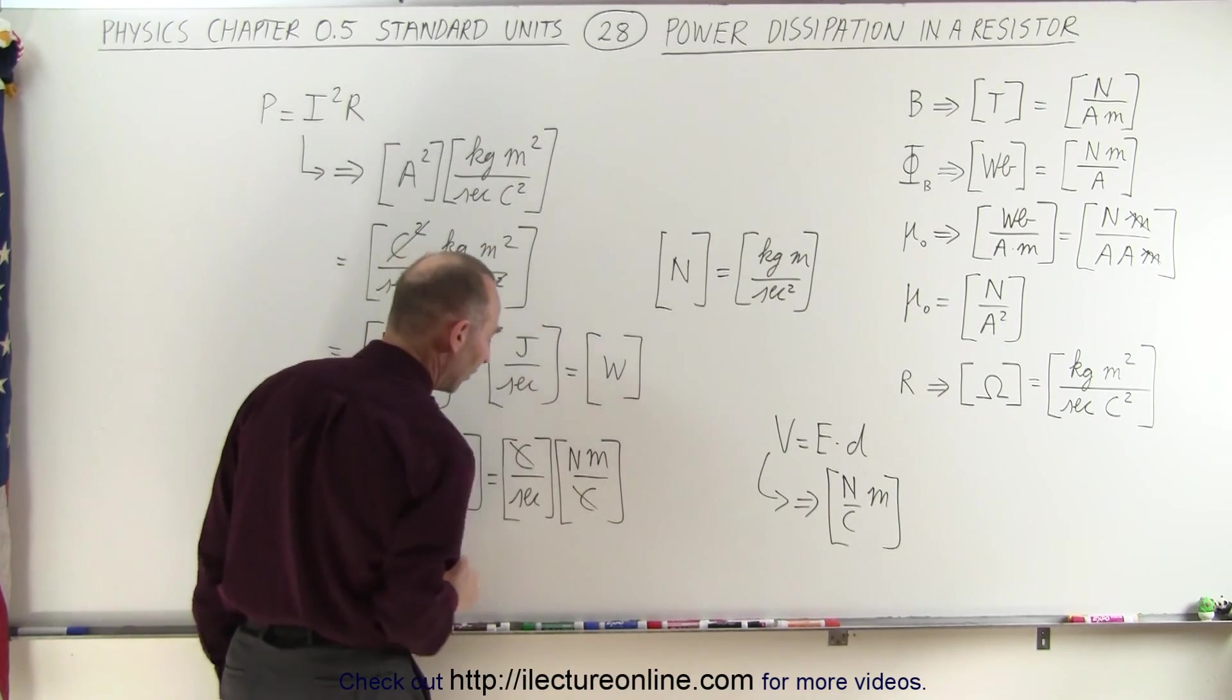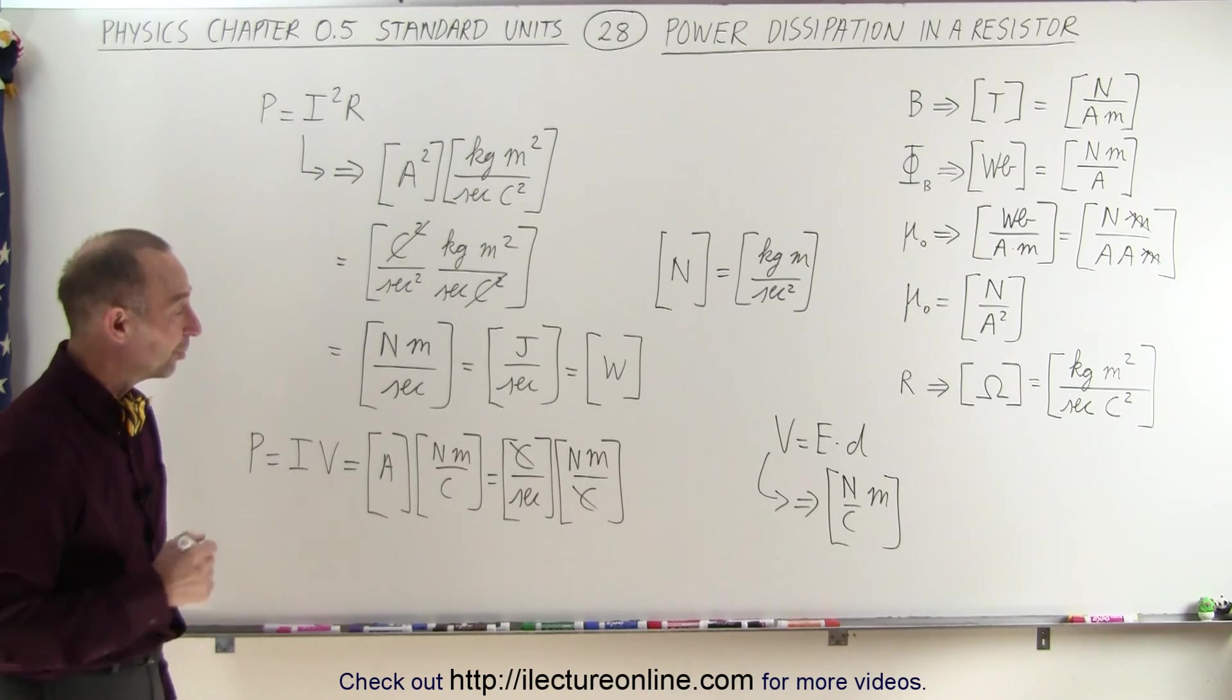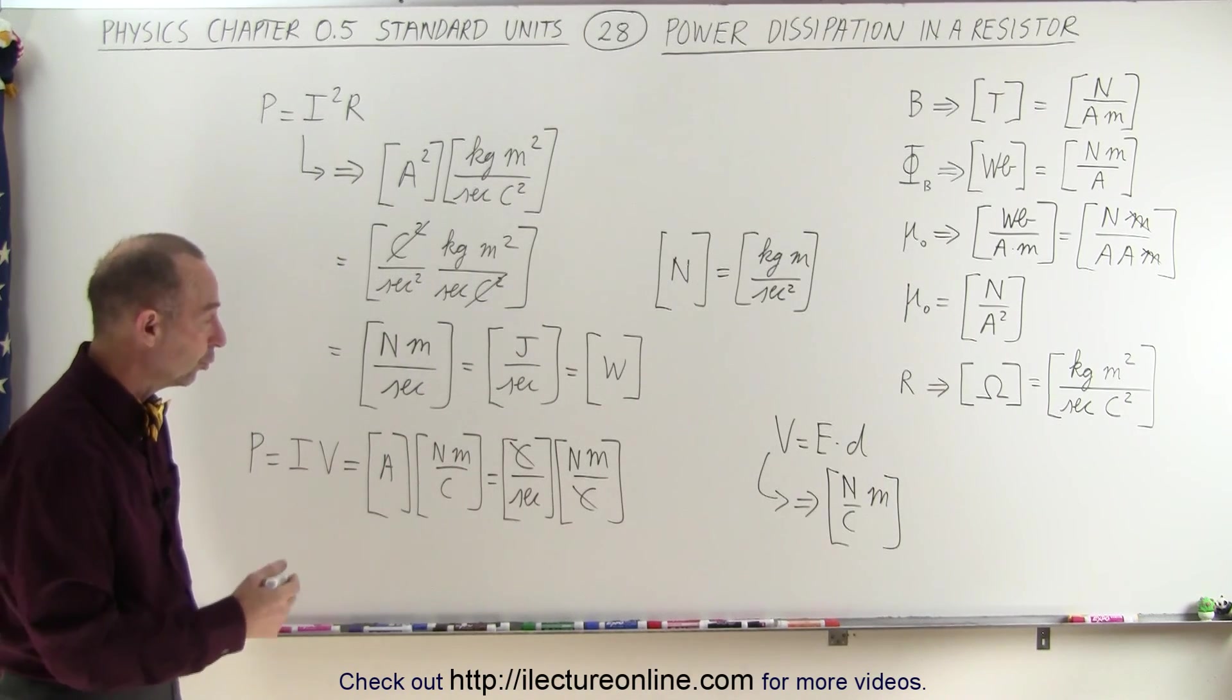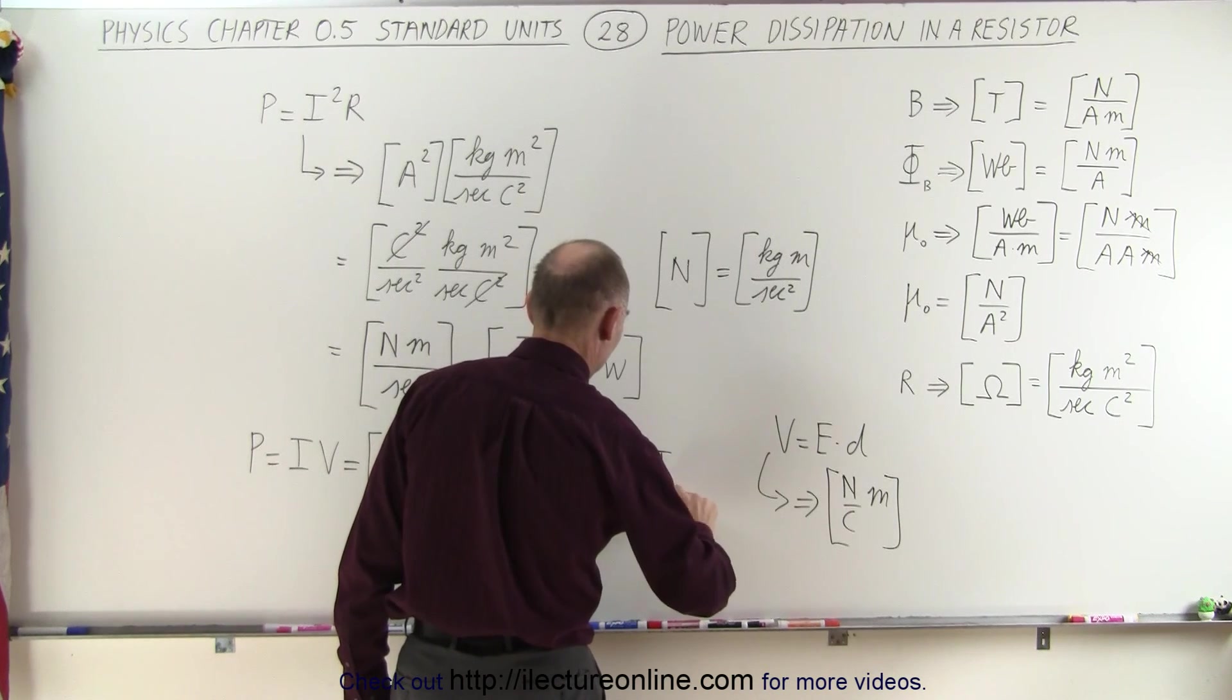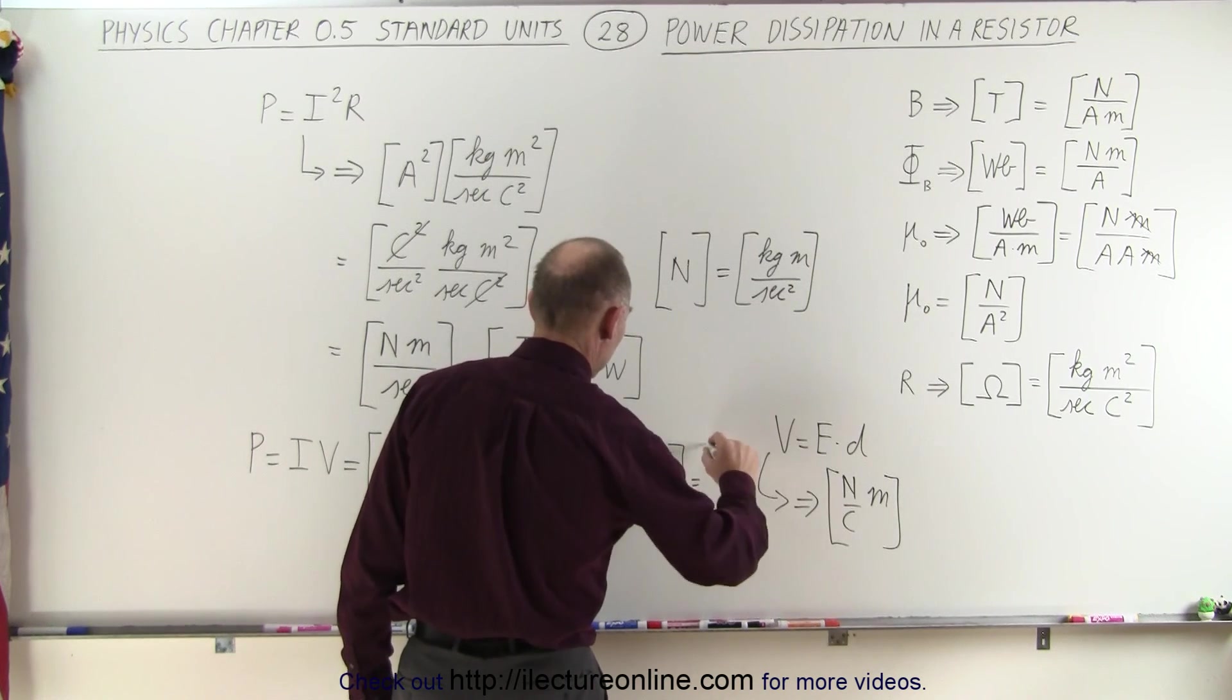And of course, the coulombs cancel out, and now we have newton meters per second, while newton meters is joules, and now we have joules per second. And just like before, you can see that's the definition of power, units are watts.